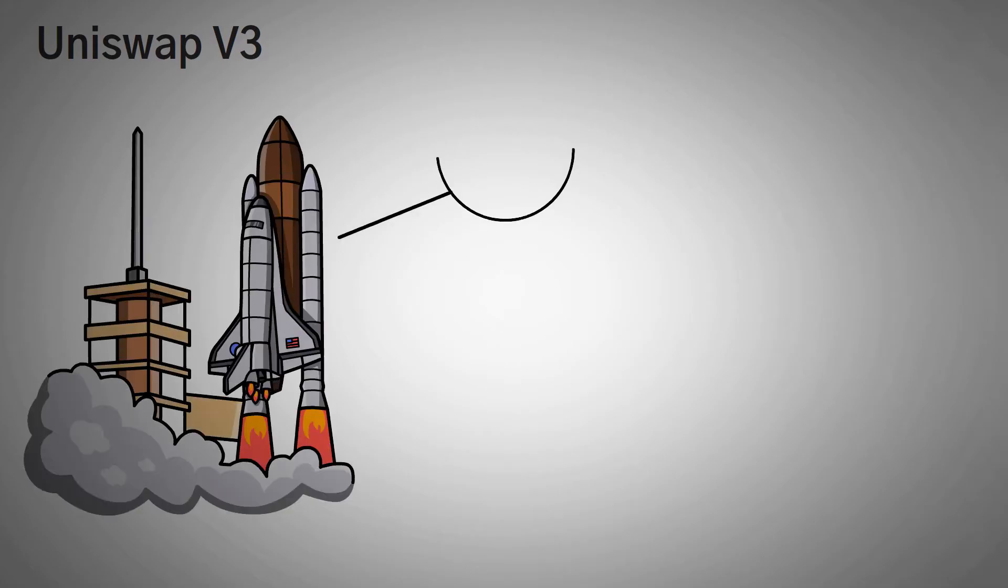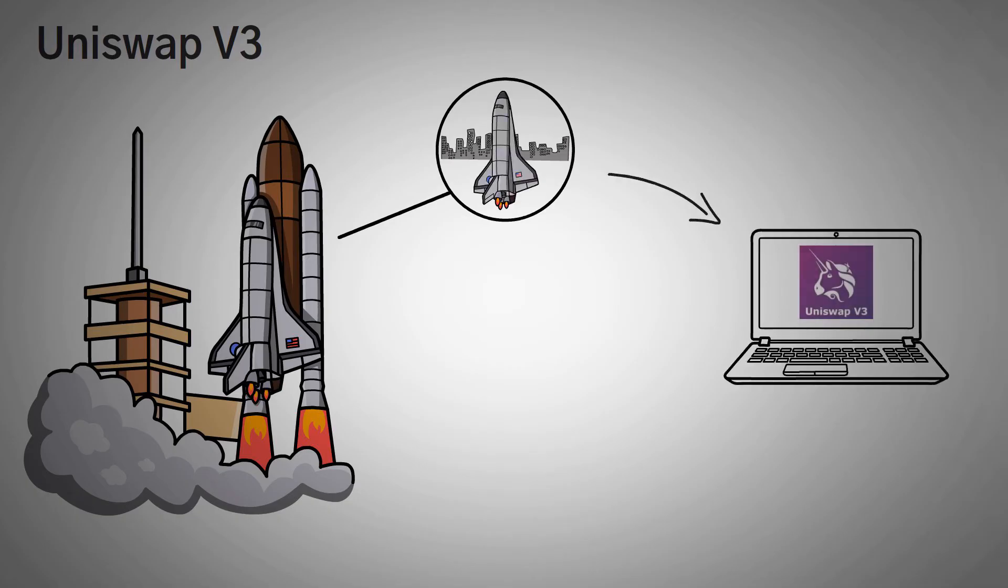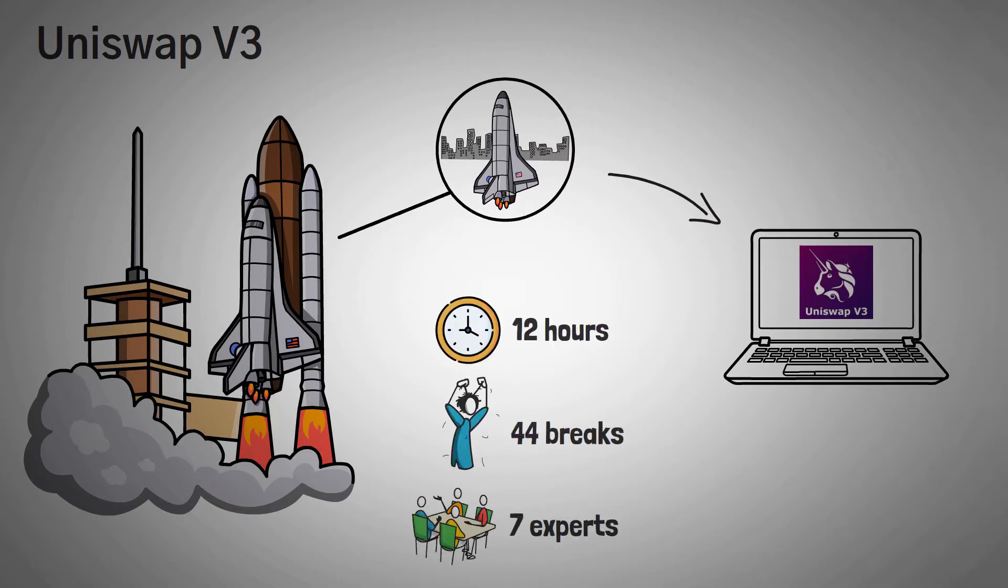Finally, it's time to start explaining Uniswap V3. Have you ever seen one of those SpaceX rockets that goes up and then it comes back down and it lands the same way it went up? I'm fairly certain that the same math used in those rockets is also used in Uniswap V3. That's how complex it starts to get. Now, short of explaining rocket science, bear with me as I explain what took me about 12 hours, 44 breaks, and about seven Uniswap experts to teach me.